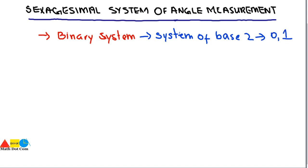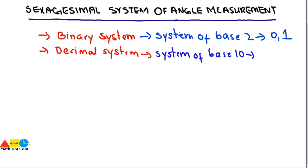Now let's look at another system — the decimal system. The decimal system is a system of base 10, and the numbers involved in it are 0, 1, 2, 3, 4, 5, 6, 7, 8, and 9. All other numbers are made from these 10 numbers.